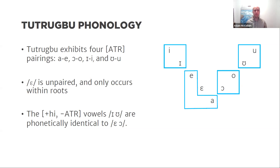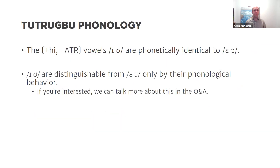One important thing to note: the plus-high minus-ATR vowels transcribed as /ɪ/ and /ʊ/ are actually phonetically identical to /e/ and /o/. The only way to really distinguish the two in the language is their phonological patterning. Their key differences affect both rounding harmony and ATR harmony — questions on those can be discussed during the Q&A.